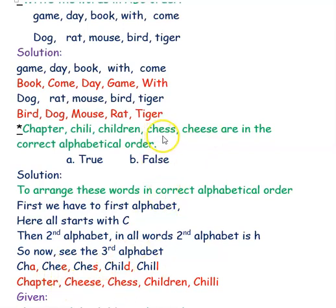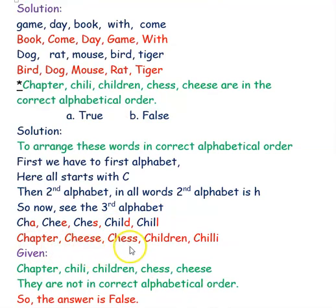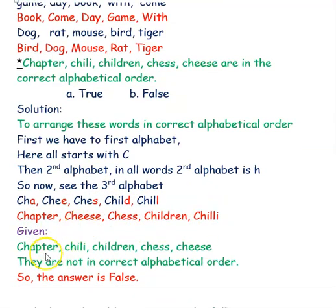The remaining two words are chili and children. The first four letters C-H-I are the same. Looking at the fifth letter: D in children comes before I in chili, so children comes before chili. The correct order is: chapter, cheese, chess, children, chili. The given order was chapter, chili, children, chess, cheese — which is not correct alphabetical order. So the answer is false.